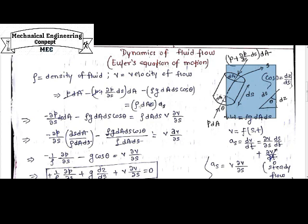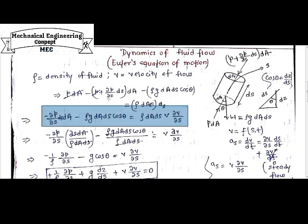Mass into acceleration will be written as rho into volume, density into volume. Density is rho. Volume will be dA into dS. Acceleration will be of fluids, as. Simplifying this equation, the resultant should be counted as this. Because p and dA will be cancelled from the other hand.